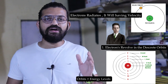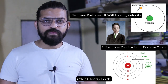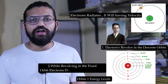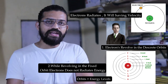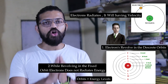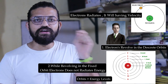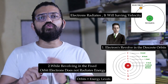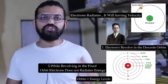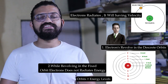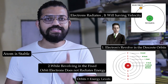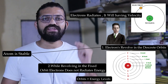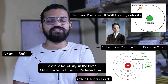The second point postulated by Bohr is that while an electron revolves in a fixed energy level, it does not radiate energy. The electron maintains a fixed energy level in that orbit. This is the reason the electron won't collide into the nucleus, and this justifies that the atom is quite stable. So the electron remains stable in its orbit.